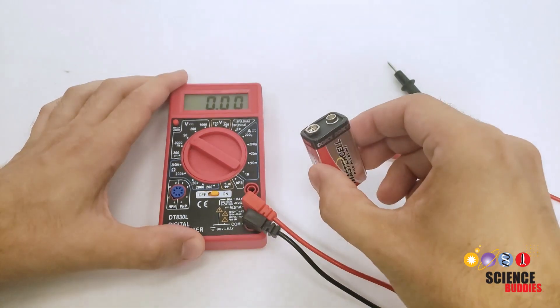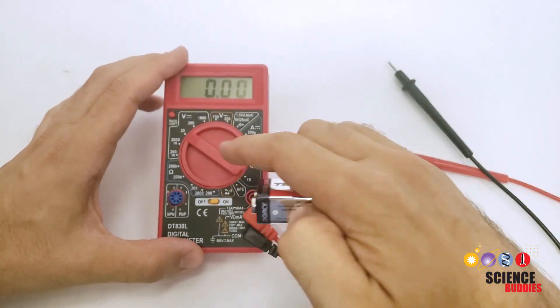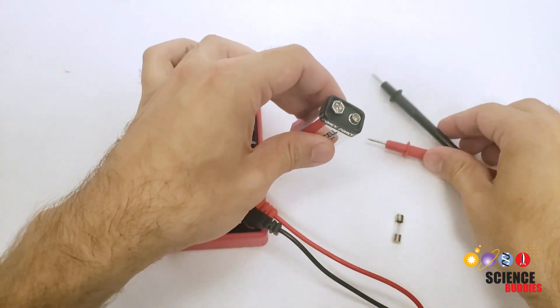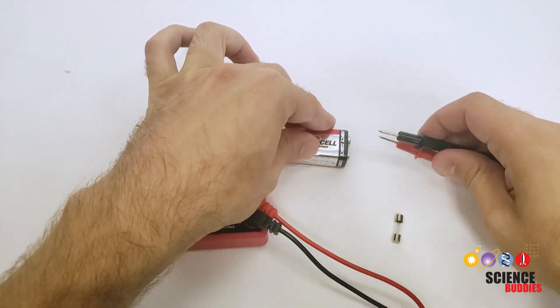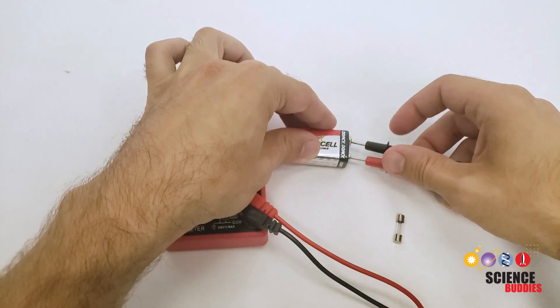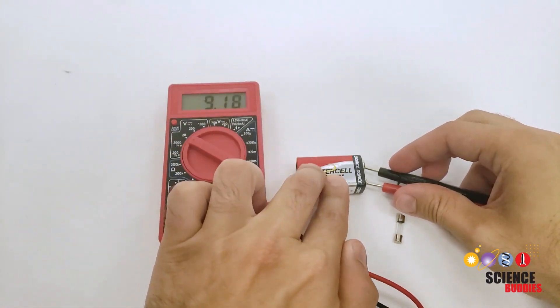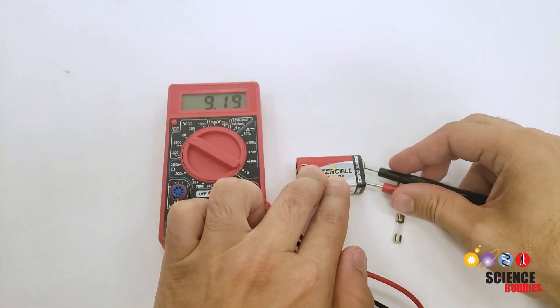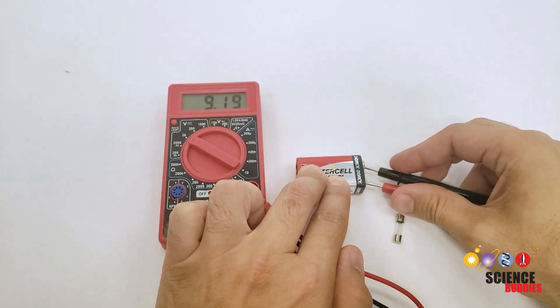Here I also have a 9 volt battery, and when I have my multimeter set to measure voltage, it is perfectly safe to take the multimeter probes and connect them directly to the terminals of the battery, and you'll see in this case I read a little over 9 volts for a fresh 9 volt battery. That is perfectly fine. It will not damage the multimeter.